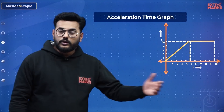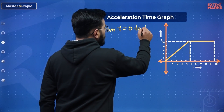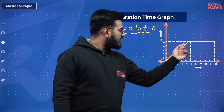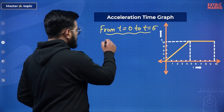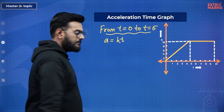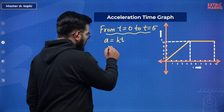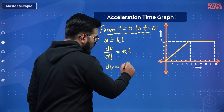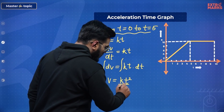For the first section, T = 0 to T = 5 seconds, acceleration has a linear relation with time — it was linearly increasing. So I can write: acceleration = kT. Replacing acceleration with dV/dT, putting dT on the other side and integrating both ends, what I finally get is V = kT²/2 + C.